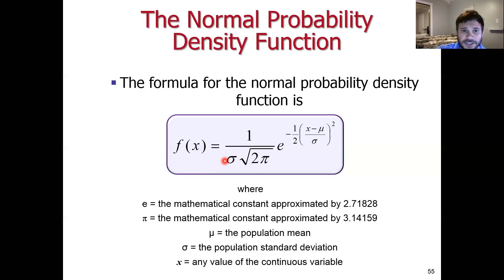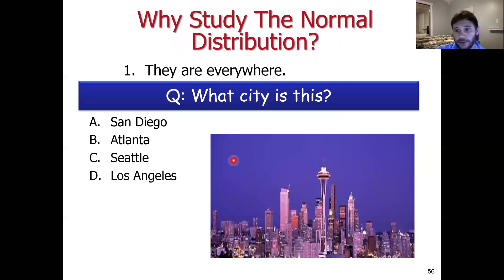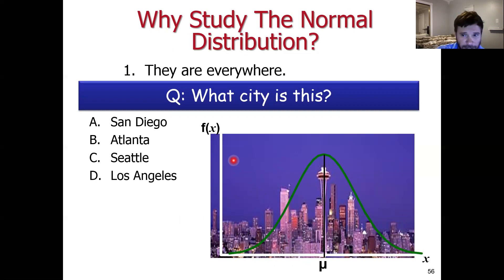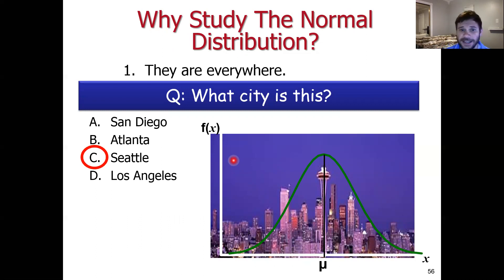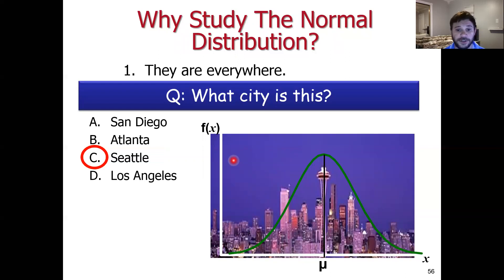Why study the normal distribution? First and foremost, they occur very naturally in nature and are absolutely everywhere. We're going to start working on characterizing a standard normal distribution. We'll exploit a statistical result later that says it's okay to assume in many cases that random variables are normally distributed — something known as the central limit theorem — but more on that later.